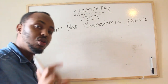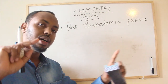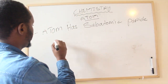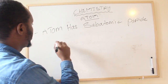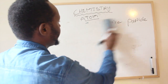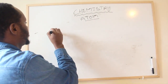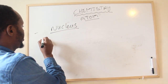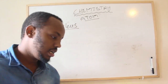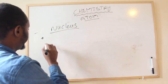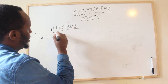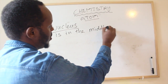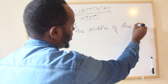This is an atom. Atom has a nucleus inside it, containing protons and neutrons. The nucleus is in the middle of the atom.